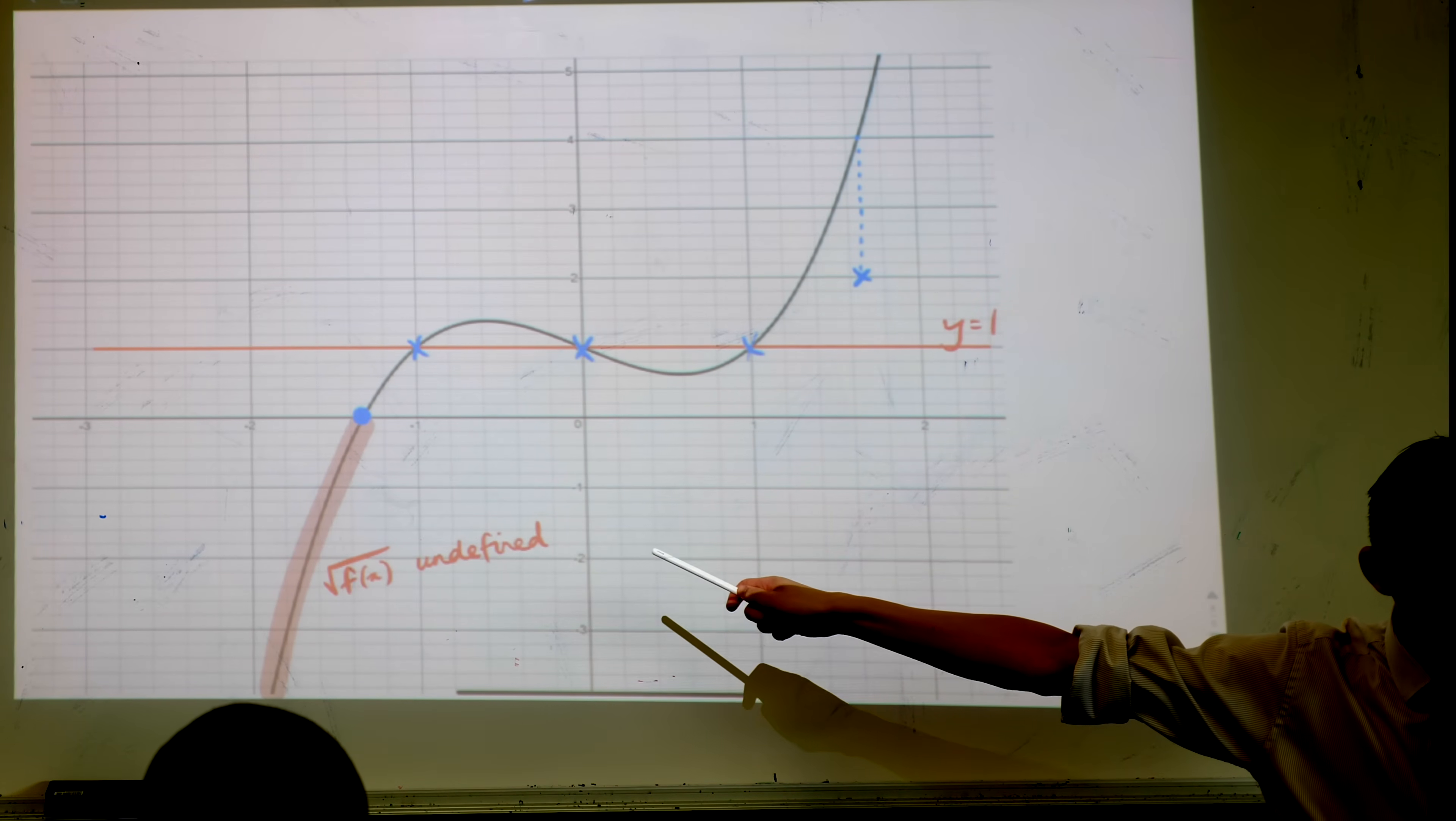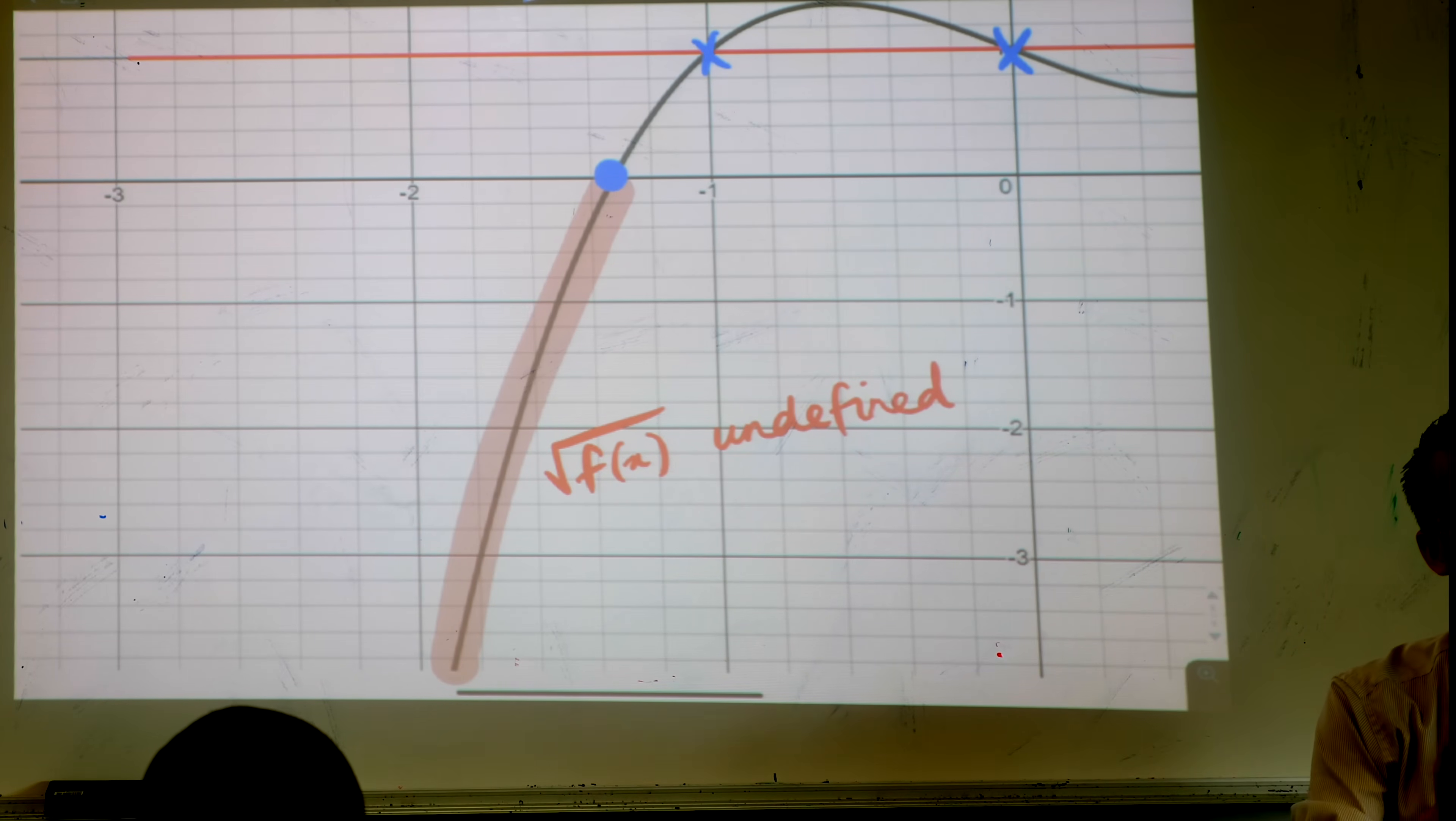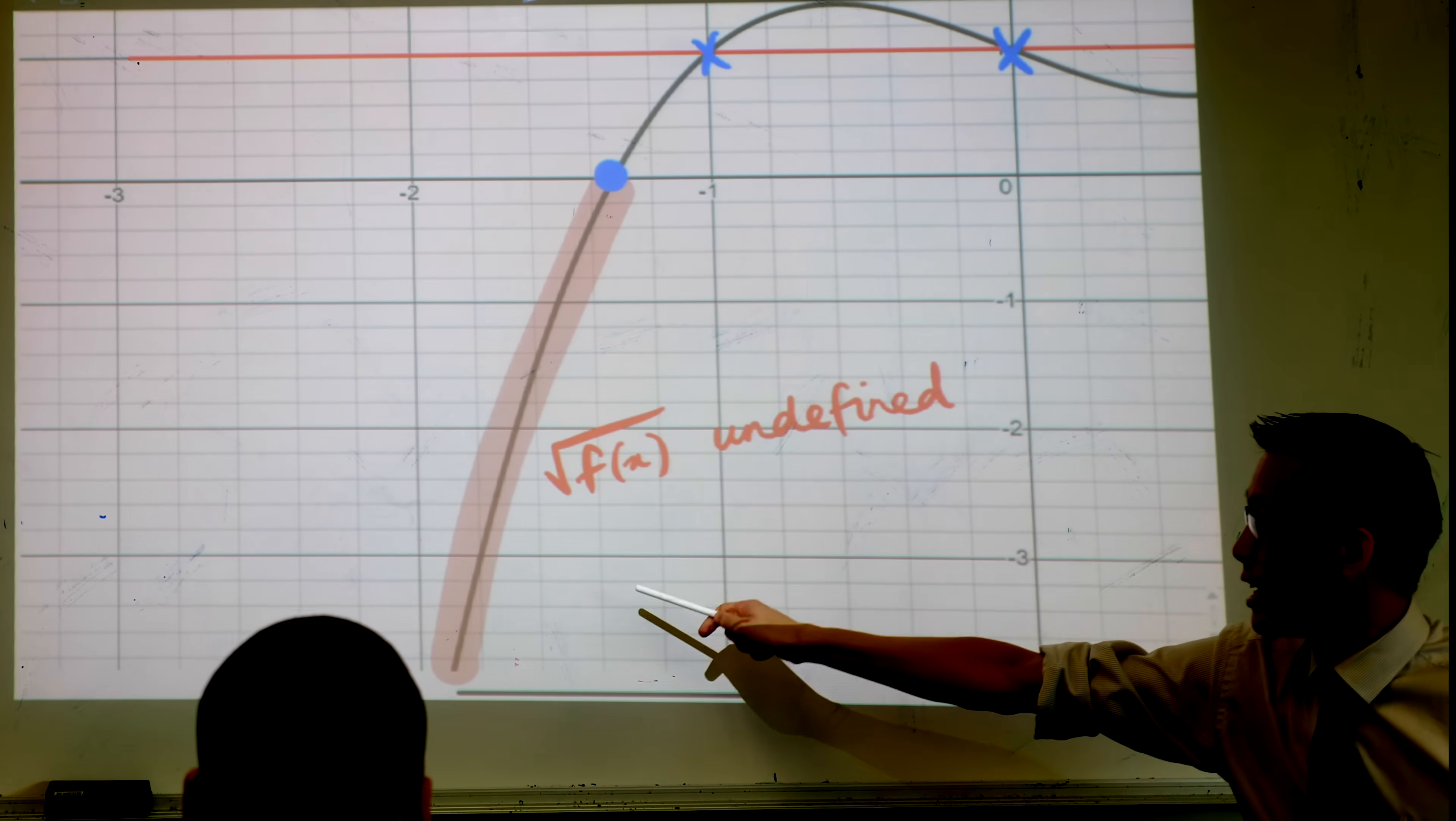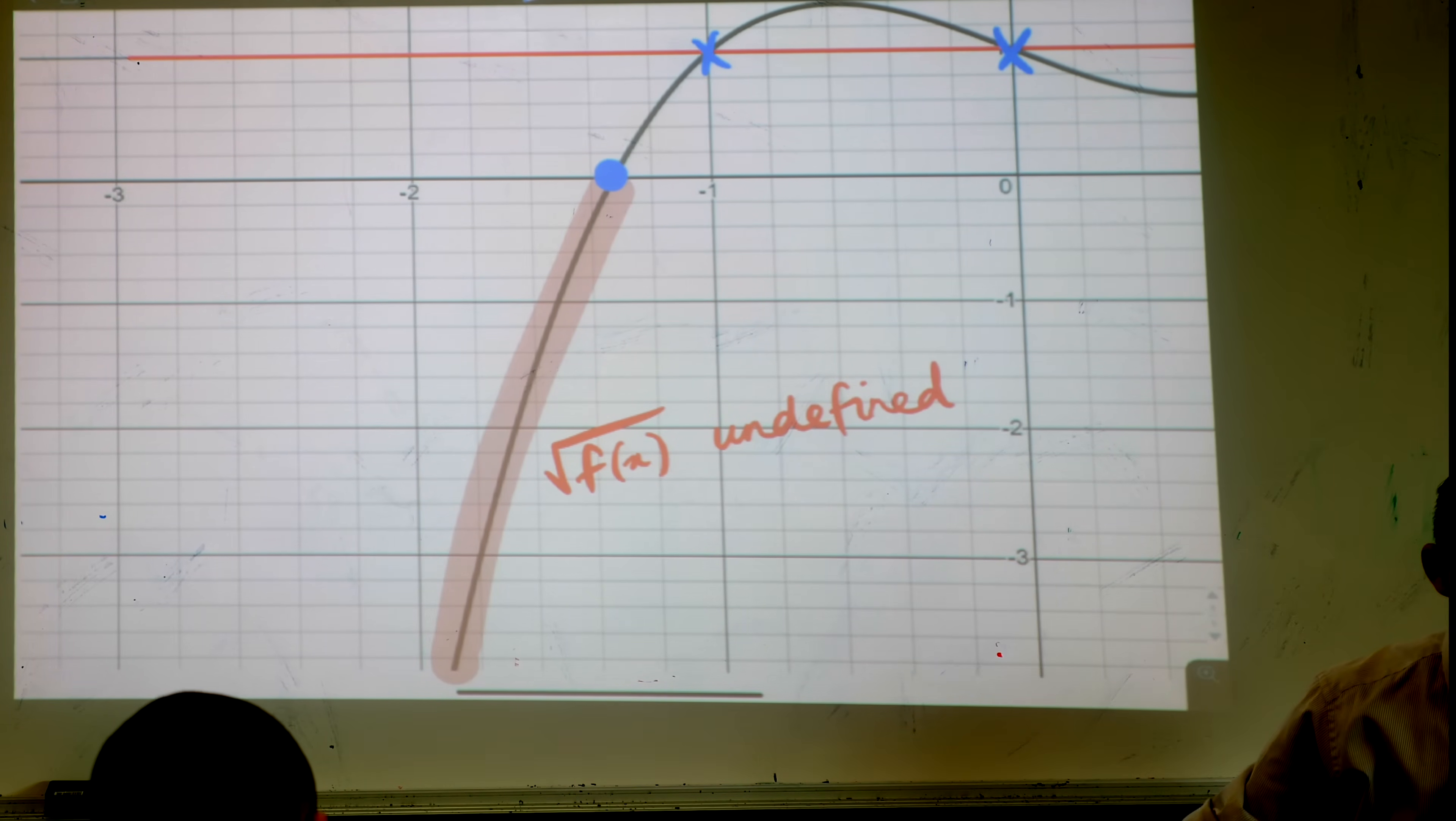I'm ignoring this part down the bottom over here because I know I'm not allowed to take the square root of a negative number. In fact, we haven't written it before, but I'd love you to write it now. When you highlight that part, the reason you're highlighting it is because the square root of this part is undefined. So that's why I'm not drawing anything over there. So go ahead, write that next to your highlighting.